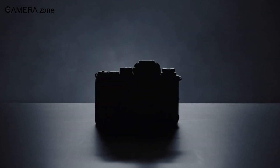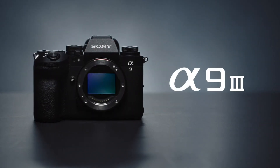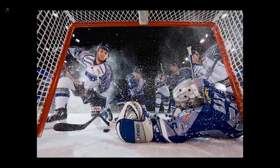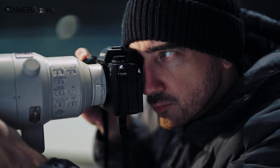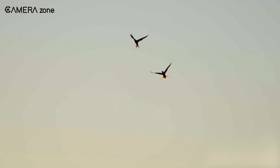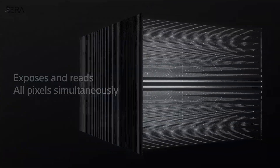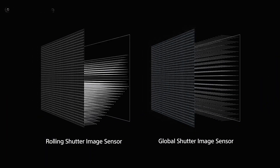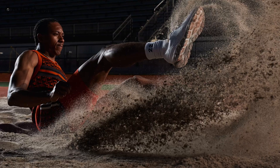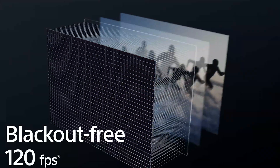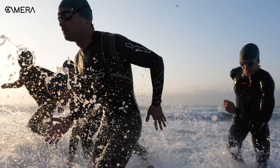The Sony A9 III stands as a pinnacle in the evolution of camera technology, introducing a revolutionary global shutter that promises to redefine the landscape of digital photography. This cutting-edge feature opens the door to a future where motion distortion artifacts are relegated to history, offering a tantalizing glimpse into what lies ahead for high-end cameras. As sensor fabrication techniques continue to advance, it is anticipated that the global shutter will become the standard in top-tier cameras, further solidifying its place as a transformative innovation in photography. Gone will be the days of compromising image quality due to motion-related issues, as the global shutter paves the way for distortion-free captures.